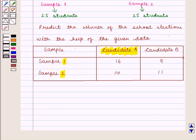It means that chances for candidate A to win the elections are more than candidate B. So, we can predict that candidate A will win the school elections.